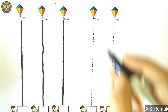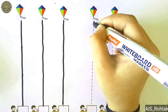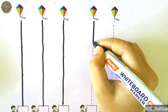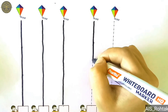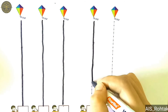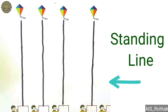Start from up. Go down, down, down, down, down, down and down. Students, I hope you all learned how to draw standing line.